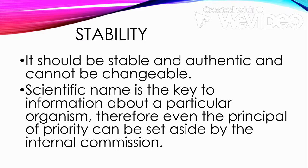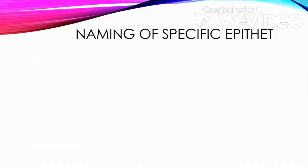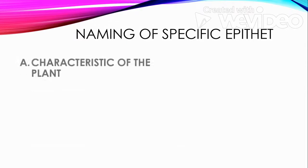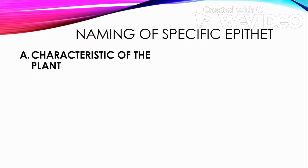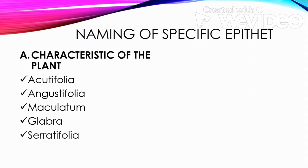Here is a list of some commonly used specific epithets related to the characteristics of a plant. Acutifolia means sharp, pointed leaflets. Angustifolia means narrow leaflets. Maculatum means the leaves are spotted. Glabra, from the Latin word glaber, which means smooth — describing the leaf as smooth. Ceratifolia, or cerat, means the leaves are marginated.